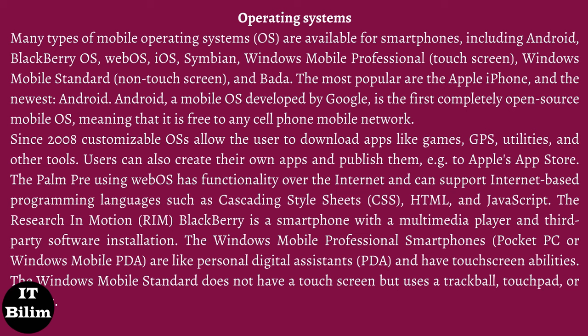Users can also create their own apps and publish them to Apple's App Store. The Palm Pre using webOS has functionality over the internet and can support internet-based programming languages such as cascading style sheets (CSS), e-mail, and JavaScript. The Research in Motion (RIM) Blackberry is a smartphone with a multimedia player and third-party software installation. The Windows Mobile Professional smartphones (Pocket PC or Windows Mobile PDA) are like personal digital assistants and have touchscreen abilities. The Windows Mobile Standard does not have a touchscreen but uses a trackball, joystick, or rockers.